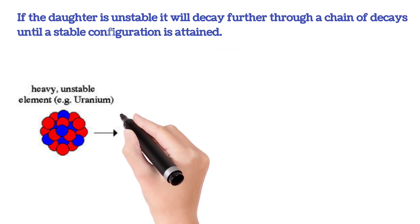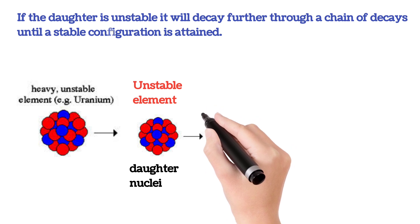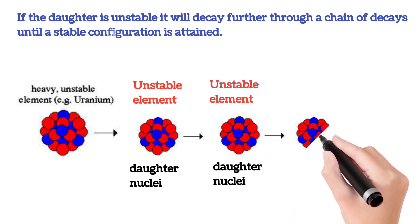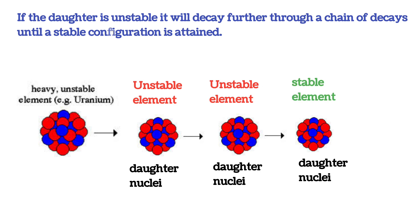If the daughter nuclei is unstable, it will decay further through a chain of decays until a stable configuration is attained.